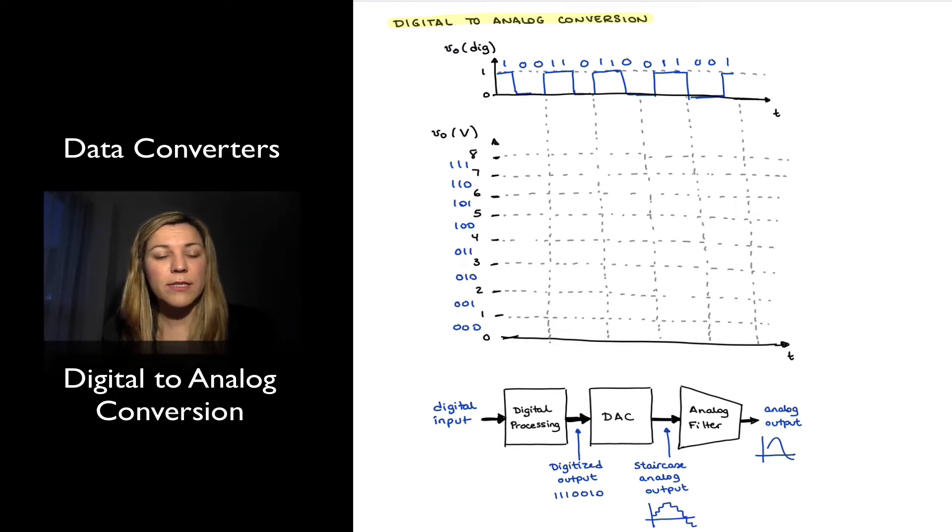Let's take a look now at the digital to analog conversion process. I have represented the original signal, the original digital signal, without any processing. So it's just the signal that we have converted from analog form into digital form and now we want to convert it back into analog form.